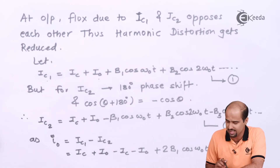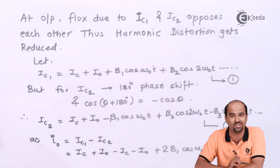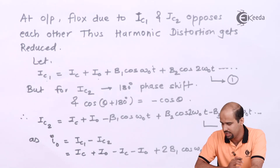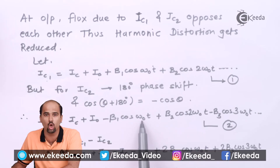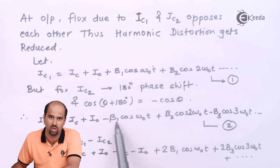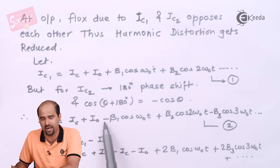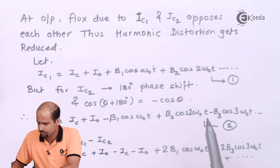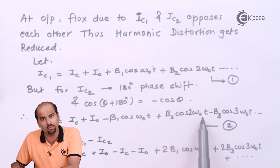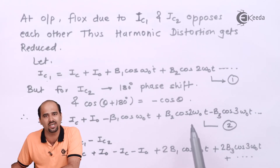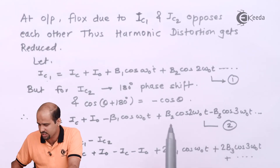Since the flux due to IC1 and IC2 opposes each other, when IC1 is positive, IC2 is negative — a 180-degree phase shift. With that phase shift, cos(ω₀t) becomes cos(ω₀t + π) = −cos(ω₀t). However, cos(2(ω₀t + π)) = cos(2ω₀t + 2π) = cos(2ω₀t), so the even harmonic terms retain their positive sign while the odd terms flip sign.